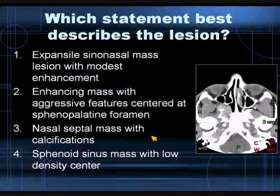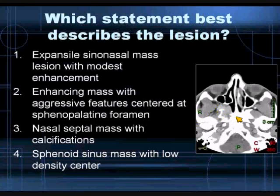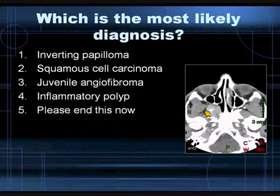88% of you feel that this is an enhancing mass with aggressive features centered at the sphenopalatine foramen. Here's the pterygopalatine fossa, and at its aperture into the nasal cavity we find the sphenopalatine foramen. This lesion is centered at that location, widening and expanding into the pterygopalatine fossa, actually into the nasopharyngeal masticator space, and secondarily involving the sphenoid bone with destructive changes.